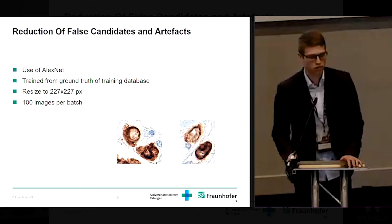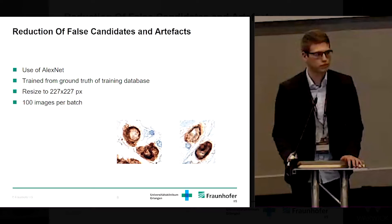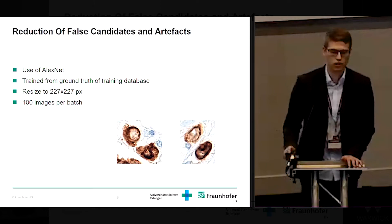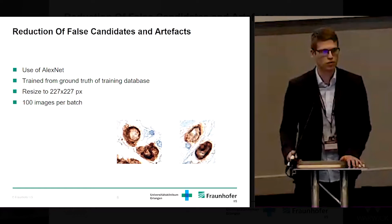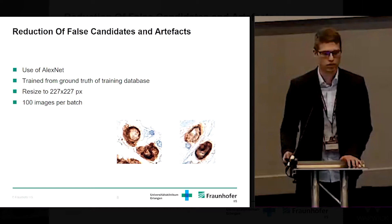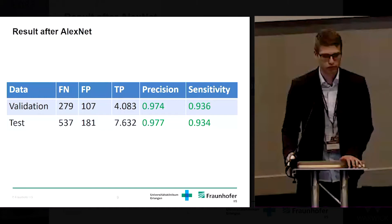We decided to use a simple AlexNet to classify whether the detected candidates are real tumor buds or false candidates and artifacts. We trained it using comparisons with the ground truth from our training database after applying the first step, resizing the result images to 227x227 pixel resolution for AlexNet and training in batches of 100 images. After that, the precision increased substantially while we nearly maintained our initial sensitivity.